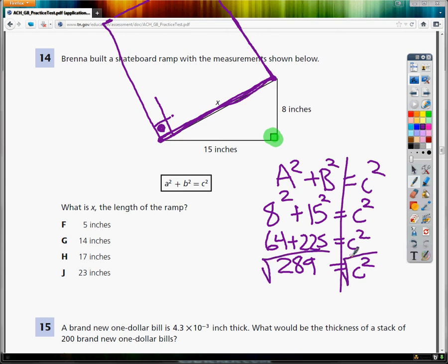So find your square root button wherever it may be and do the square root of 289 and you get C = 17.